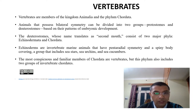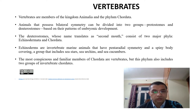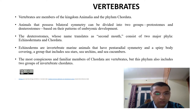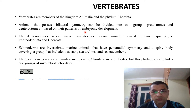Hello dear students, today I am telling you about the vertebrates. Vertebrates are the animals. There is a narration that all the vertebrates are the chordates, but all chordates are not the vertebrates. Chordates have three characteristic features: number one is the dorsal tubular nerve cord, number two is notochord, and number three is post-anal tail.